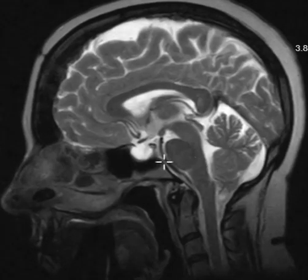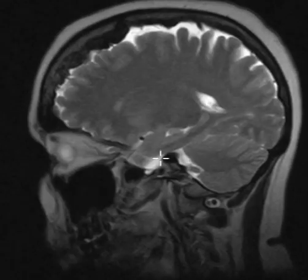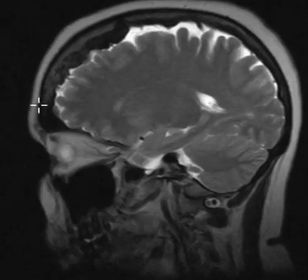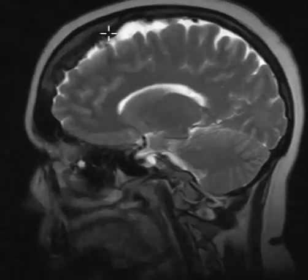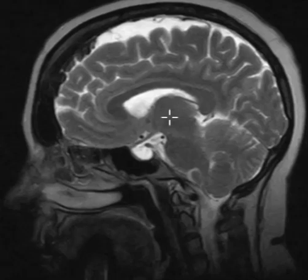Just to recap: this is what we call a partially empty sella, and the sella is mildly expanded, related to elevated intracranial pressure — we call that pseudotumor cerebri. This patient also has hyperostosis frontalis interna, a benign process where the inner table of the skull is thickened and looks irregular, most commonly seen in older females and typically asymptomatic. Thank you very much.